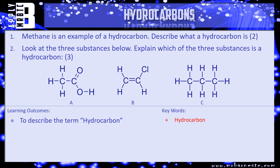Let's see what the examiner can ask you on this. Question one: methane is an example of a hydrocarbon — what is a hydrocarbon? That's two marks and should be nice and easy. Question two: look at the three substances A, B, and C — explain which of the three is a hydrocarbon, why it is, and why the others aren't. Pause the video and have a go.